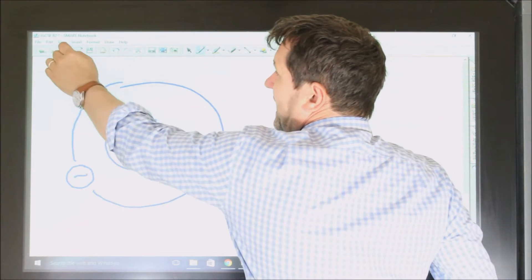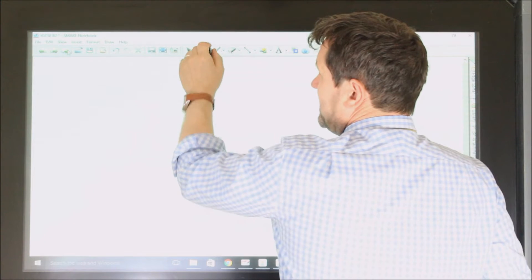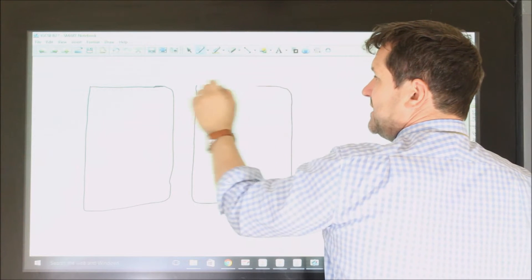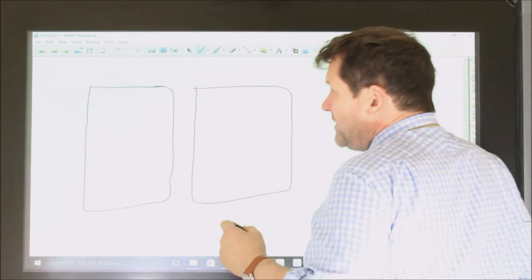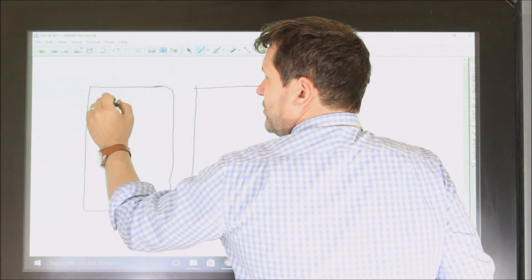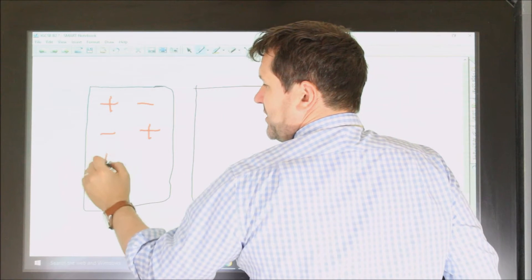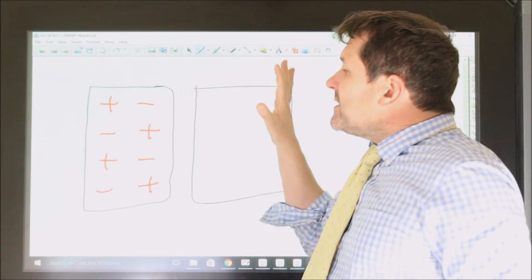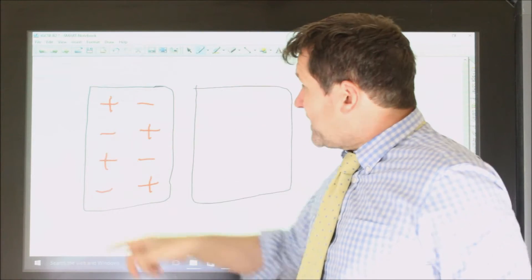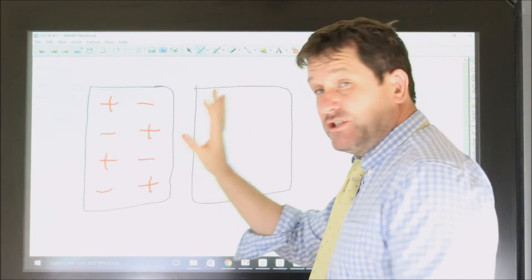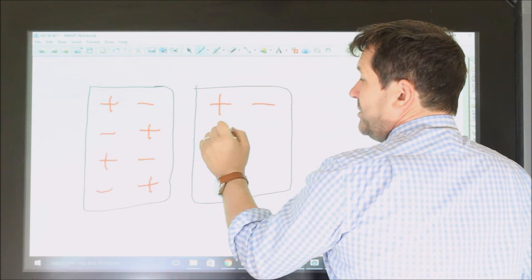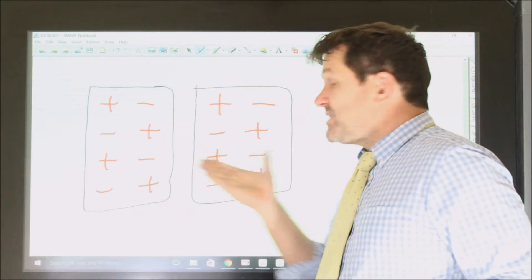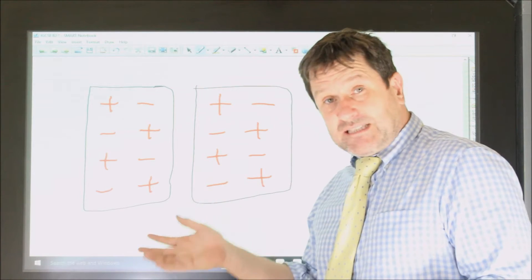If we have two objects and they rub together — it could be a rod and a duster, it could be anything — they contain equal numbers of protons and electrons. Obviously this would be millions and millions, but at the moment each is neutral because it has four pluses and four minuses. Equal numbers of protons and electrons means they're both neutral: they don't attract and they don't repel each other.